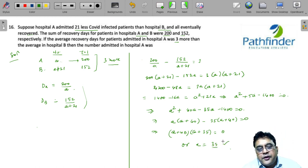So the number of patients admitted in A must be equal to 35. It boils down to writing this simple equation as fast as you can.